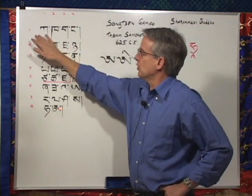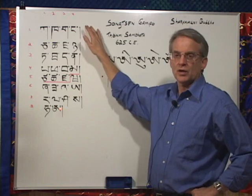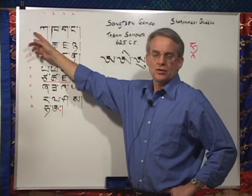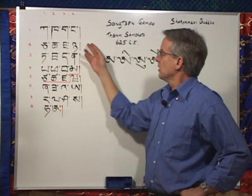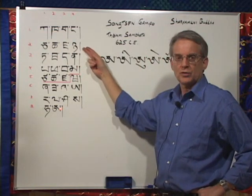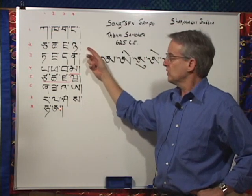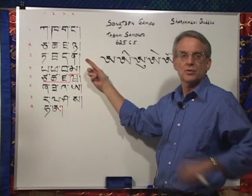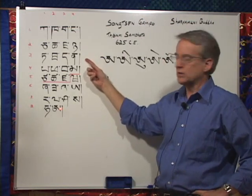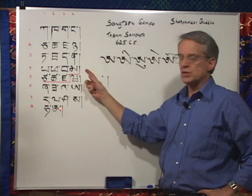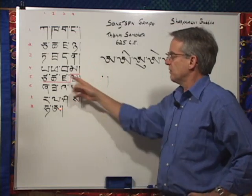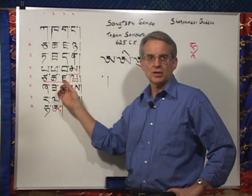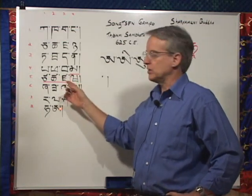Here the first row, which we can call the ka row, all the sounds are made in the throat. In the second row, all the sounds are made at the roof of the mouth. In the third, all the sounds are made at the teeth, with the tip of the tongue against the back of the teeth. In the fourth, the sounds are made with the lips. In the first three letters of the fifth row, the sounds are made again at the roof of the mouth.